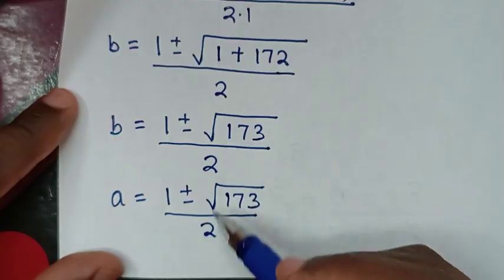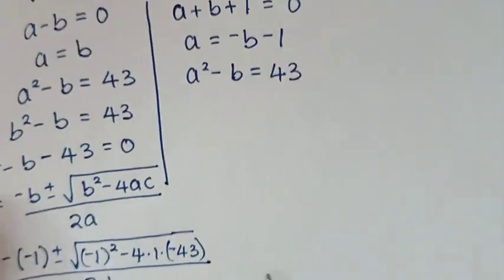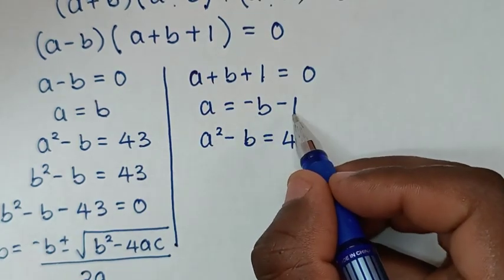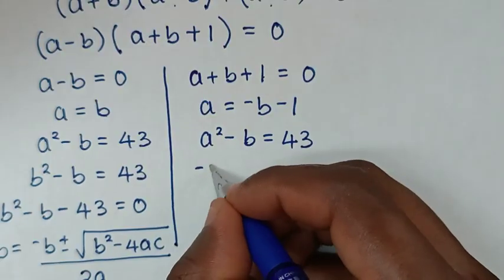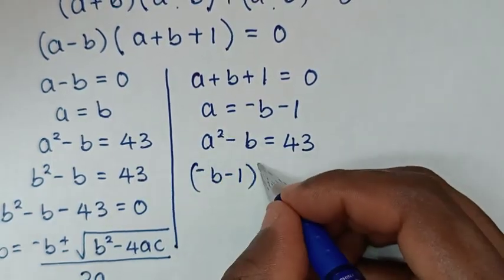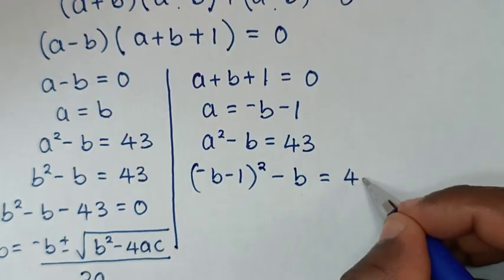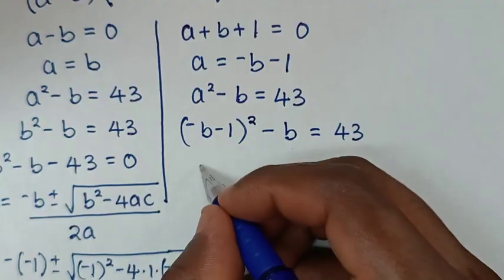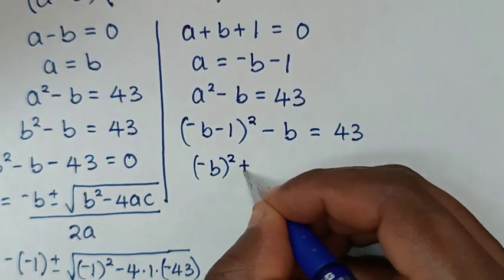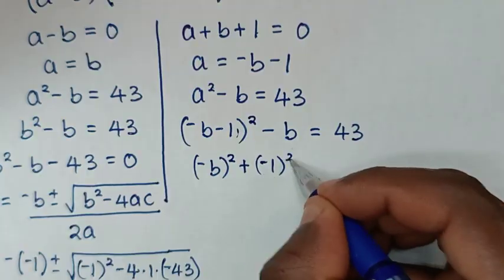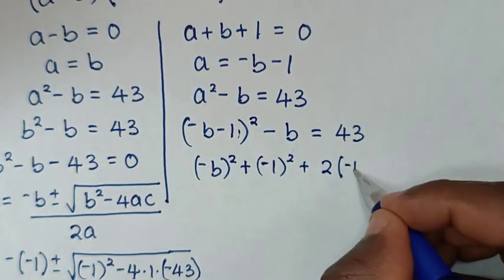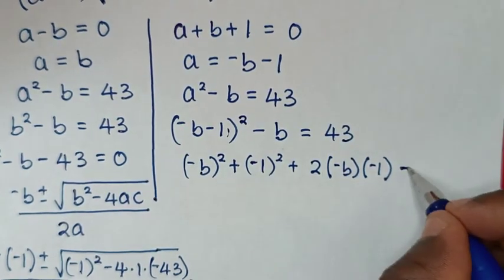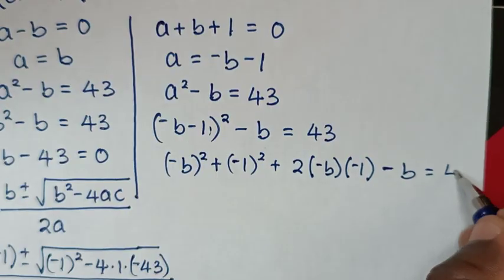For the second solution, a equals negative b minus 1. We substitute this into equation 1: (negative b minus 1) squared minus b equals 43. Expanding the square gives negative b squared plus negative 1 squared plus 2 times negative b times negative 1, which is b squared plus 1 plus 2b, then minus b equals 43.